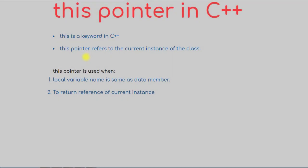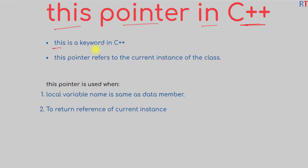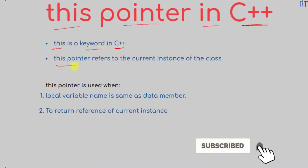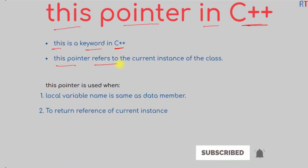In this video we're going to talk about the `this` pointer in C++ programming. `this` is a keyword in C++ and it refers to the current instance of the class. The `this` pointer is mainly used when the local variable name is the same as the data member.